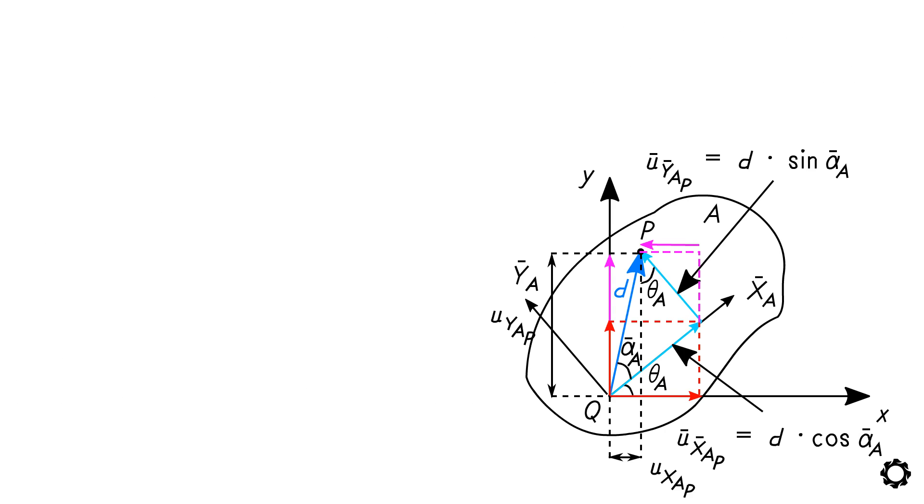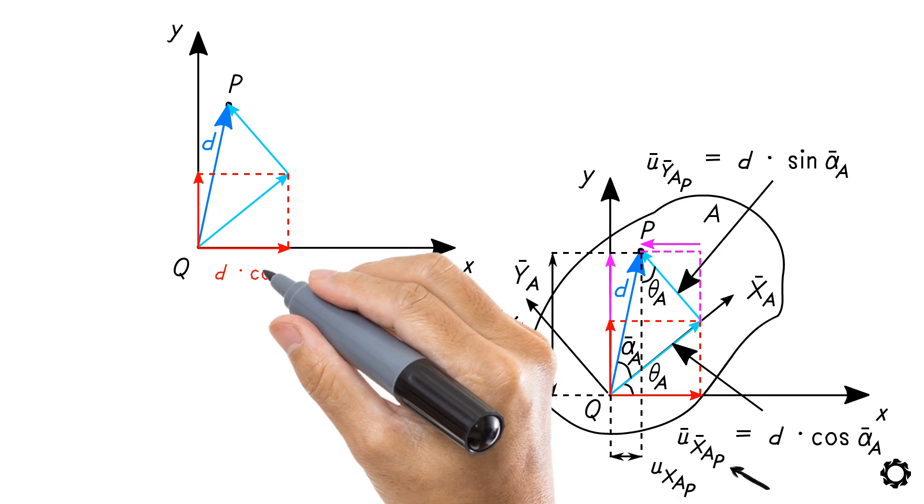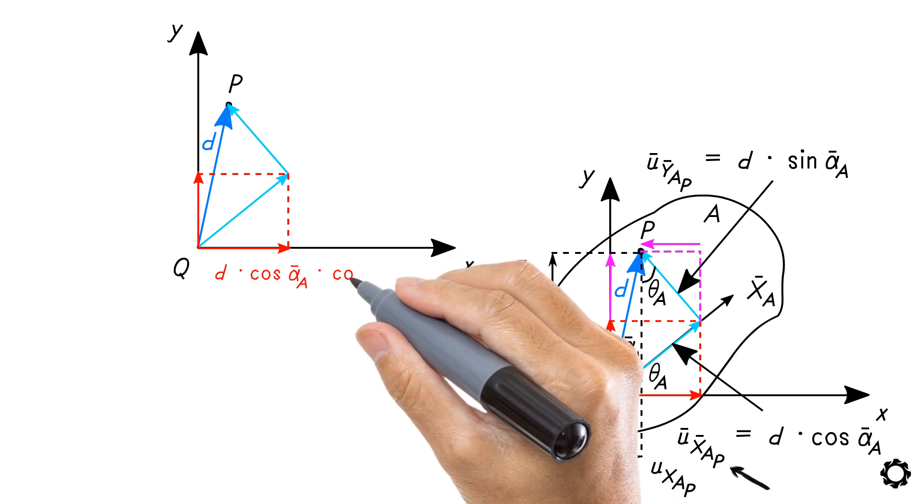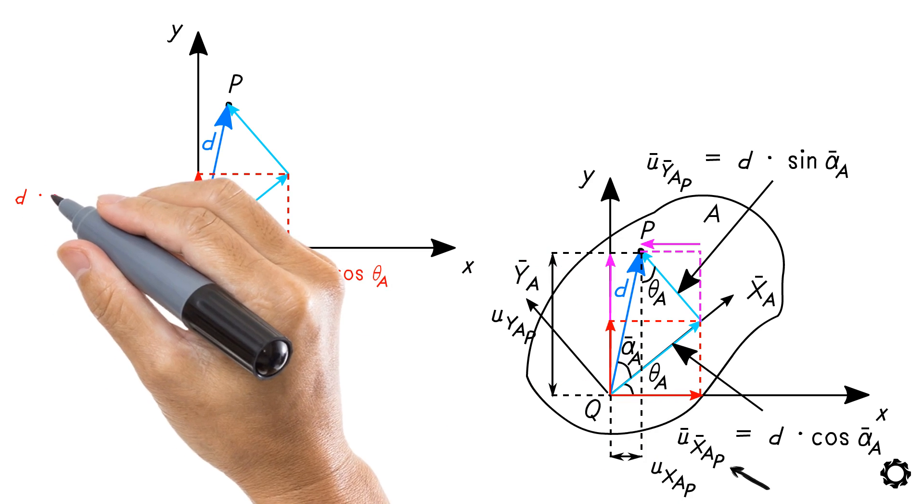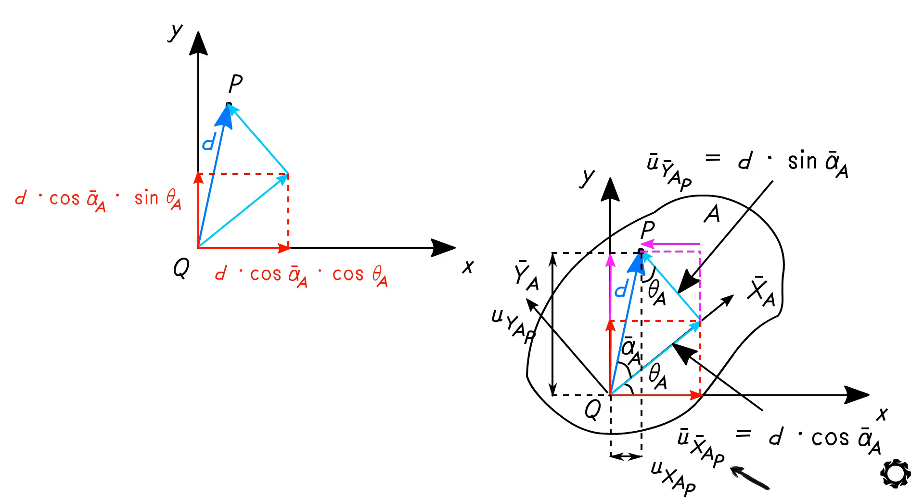Let's take the component u̅_x̅_ap. Notice how this component has projections on both axes x and y represented by d·cos(ᾱ_a)·cos(θ_a) and d·cos(ᾱ_a)·sin(θ_a) respectively.